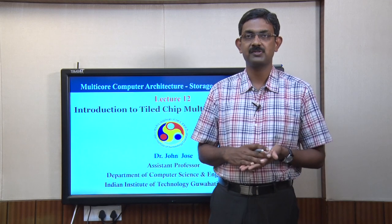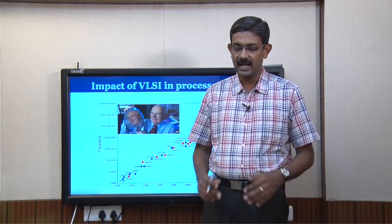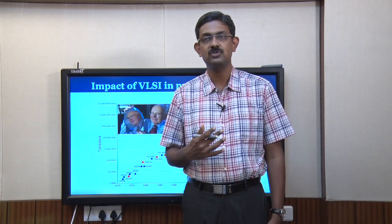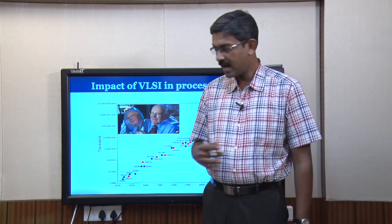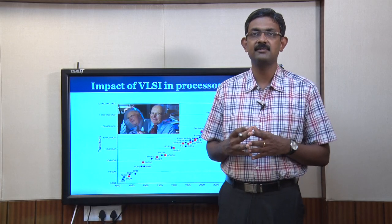What was the need to move from single-core processors to multi-core processors? This graph shows the trend of transistors available inside a single chip. Gordon Moore predicted that the number of transistors inside an IC is going to double every 18 months. Over the years, many processors were developed and manufactured, and the number of transistors plotted on the y-axis shows a steady increase. Thanks to VLSI design techniques, we could squeeze more transistors into a given space.